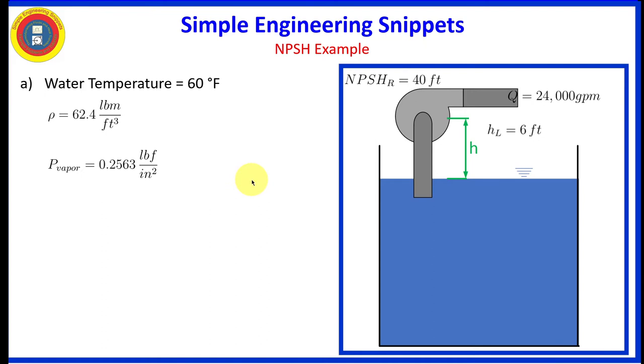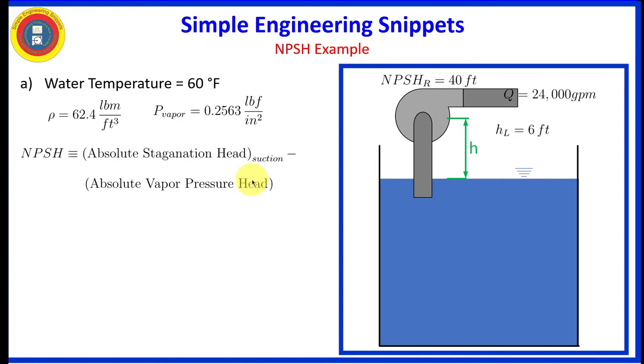Okay, so let's save some of our information. All right, let's review net positive suction head. Net positive suction head is equal to the absolute stagnation head at the pump suction minus the absolute vapor pressure head.